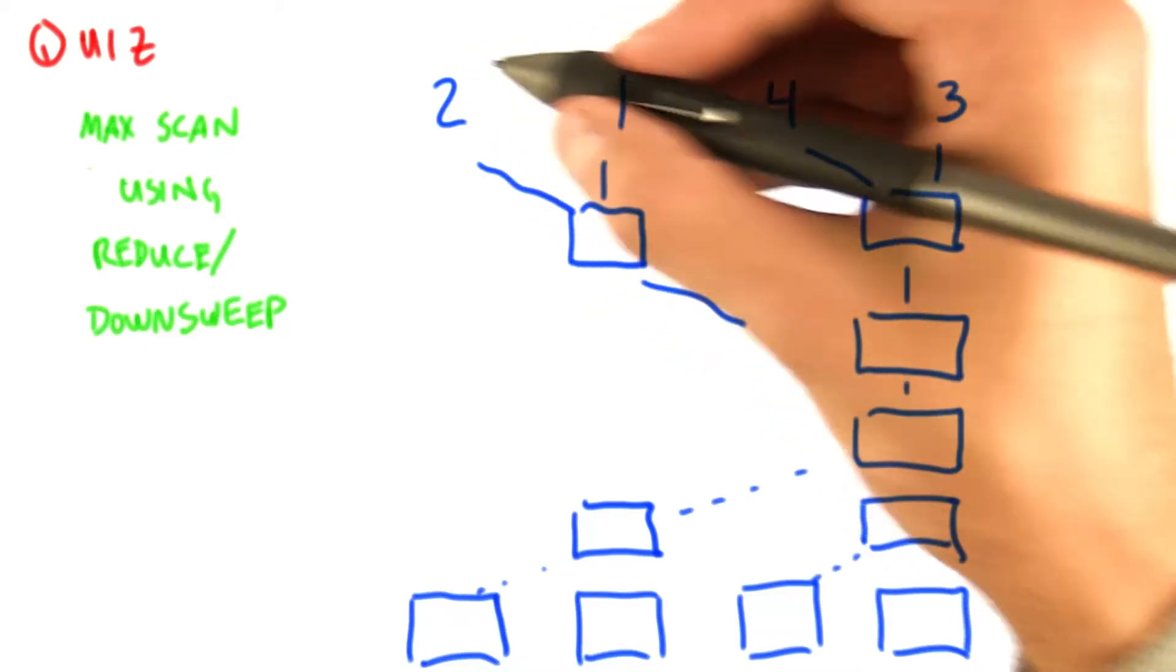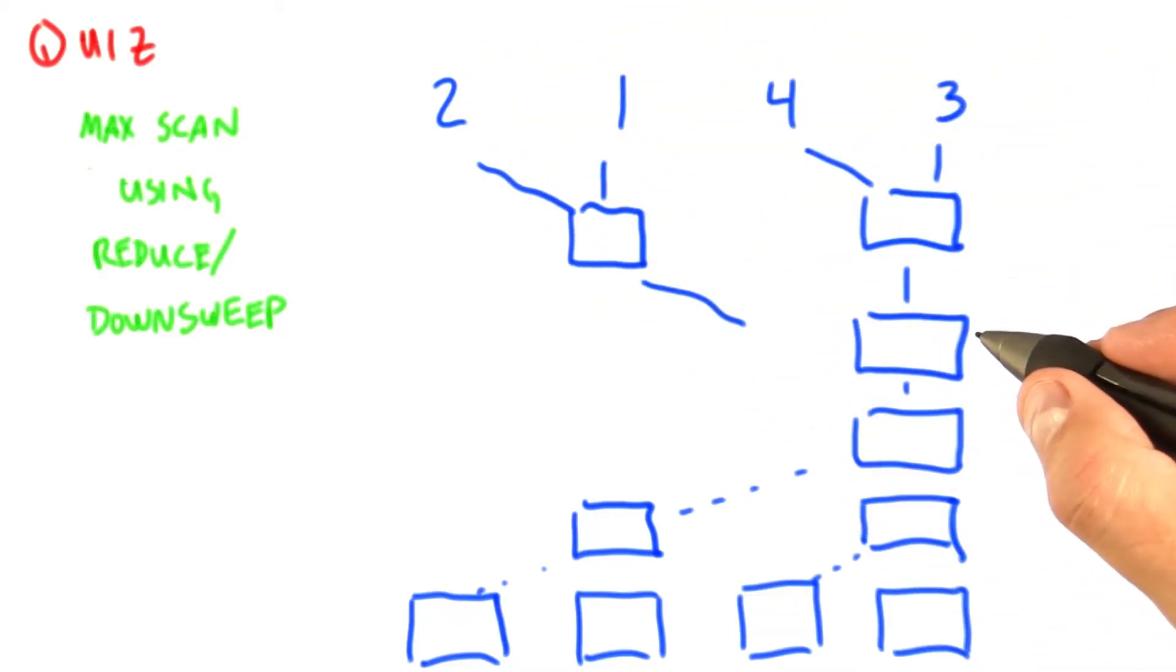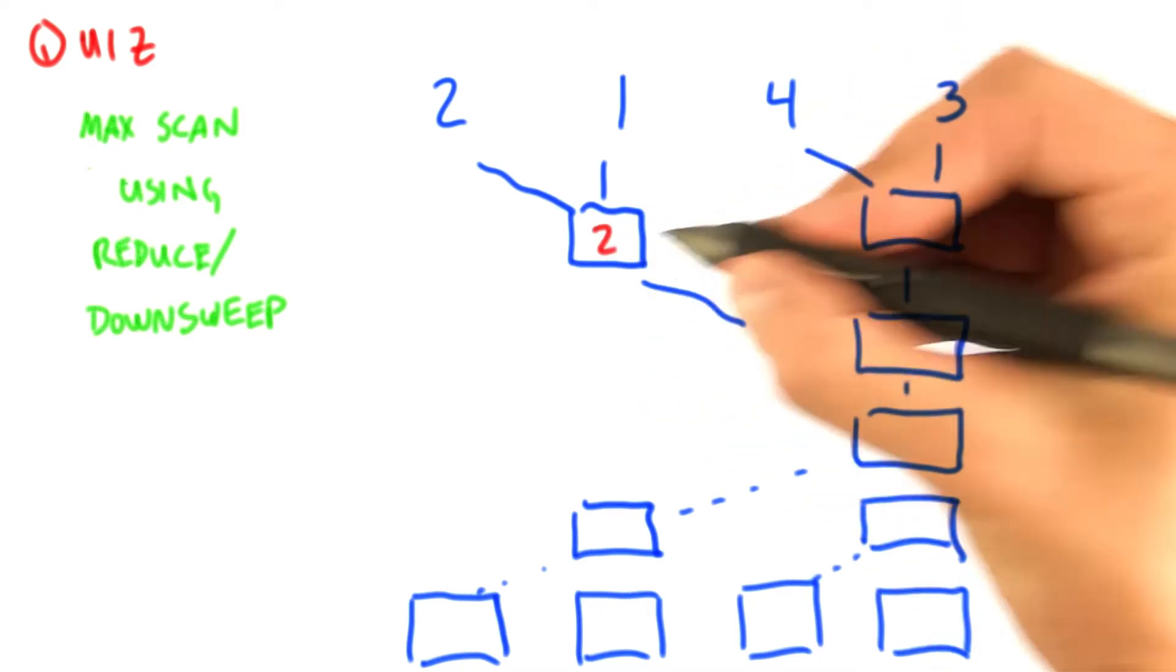Okay, let's see how we do this. The operator that we're going to do during the reduce is max. So 2 max 1, which one's bigger? 2.